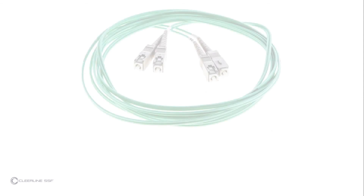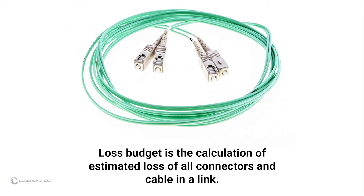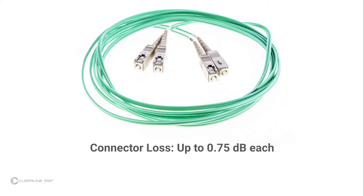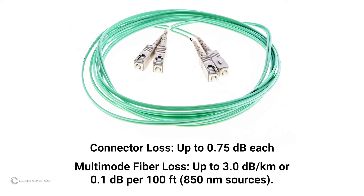Clearline advocates following established guidelines for insertion loss testing, such as those established by the Fiber Optic Association (FOA), and references these FOA standards in both equipment instructions and this video. Loss budget is the calculation of estimated loss of all connectors and cable in a link. Loss budgets can be calculated during design; in testing after installation, the actual loss is compared to the budget to ensure proper installation to industry standard. Each connector under test is allowed up to 0.75 decibels per the EIA-TIA 568 standard. Single-mode fiber loss is calculated at an average loss of 1.0 decibel per kilometer for 1310 nanometer sources, or roughly 0.1 decibels per 600 feet.